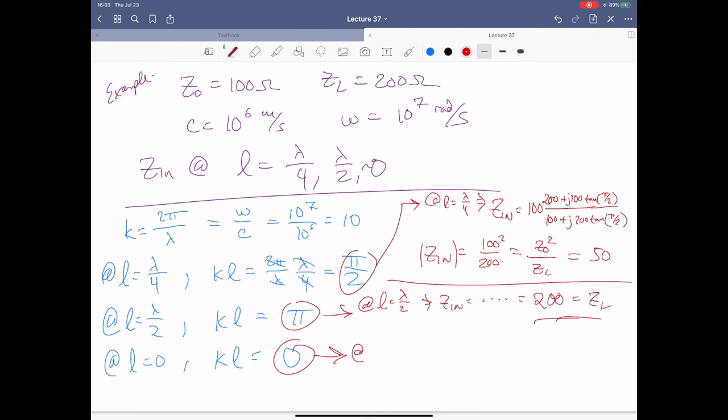At l equals zero, we have Z_in equal to, well, it's 100 times 200 over 100, so these two cancel, it's just equal to Z_L again. Effectively our input impedance is equal to our load impedance for these two values here and here. That's nice. And then in between, it's a little bit smaller. At l equals lambda over four, we end up with just a 50 for the input impedance.